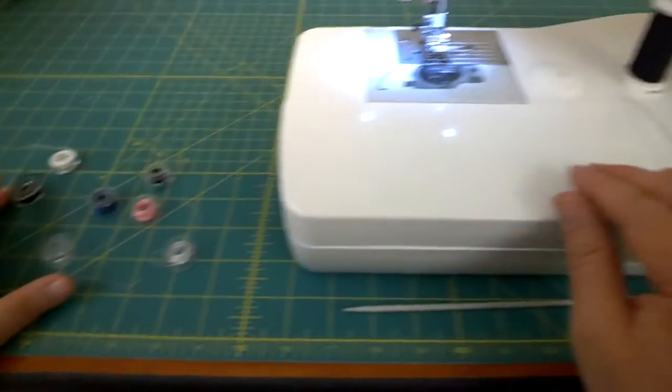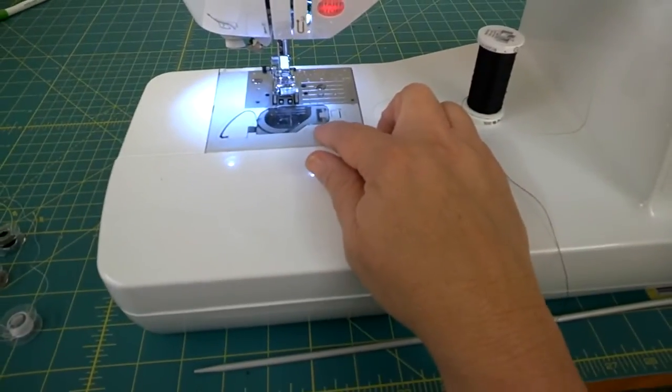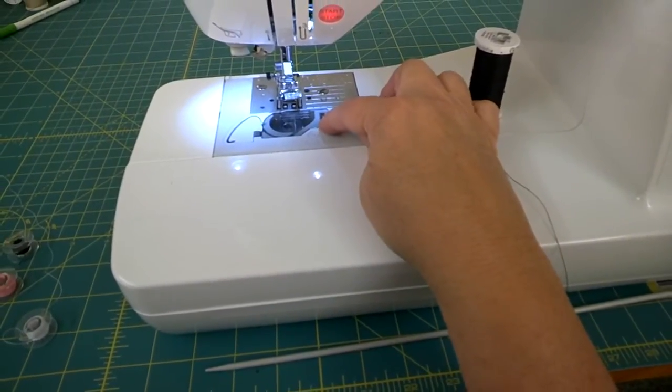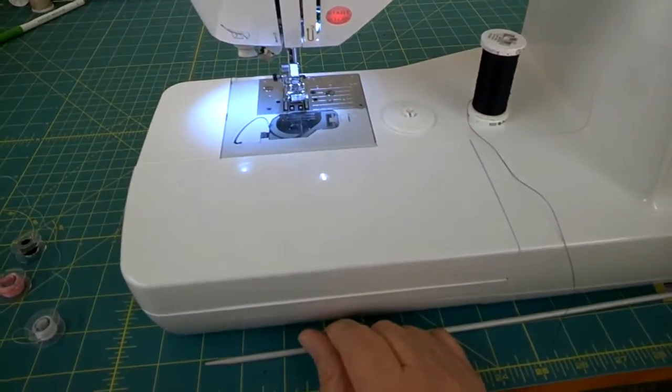The bobbins go in the bottom of the sewing machine right here. So right here in the bottom is where the bobbin goes and it's the bottom thread of your stitching when you sew.